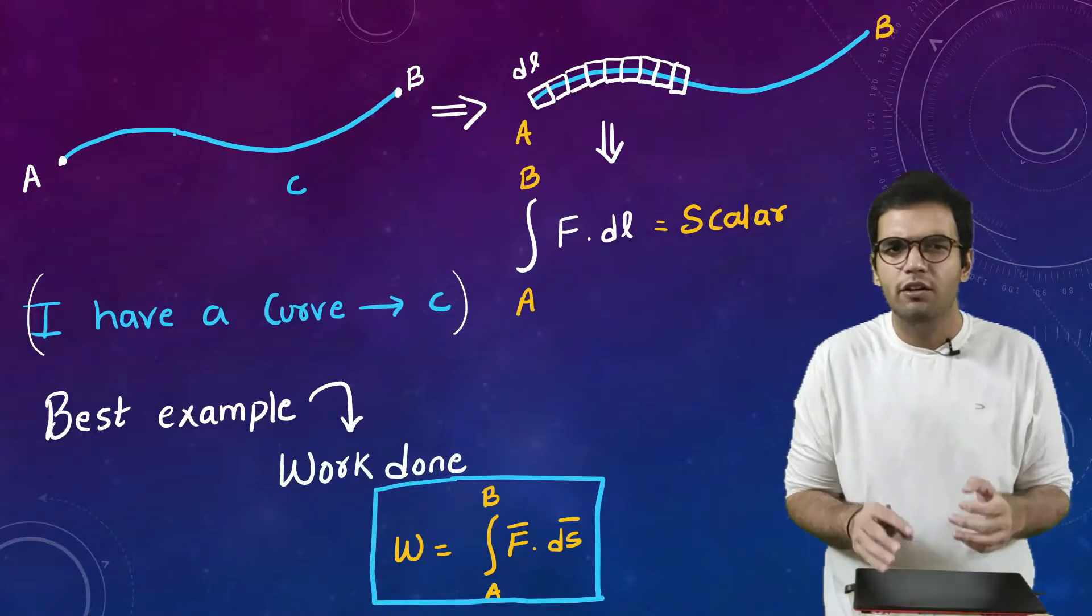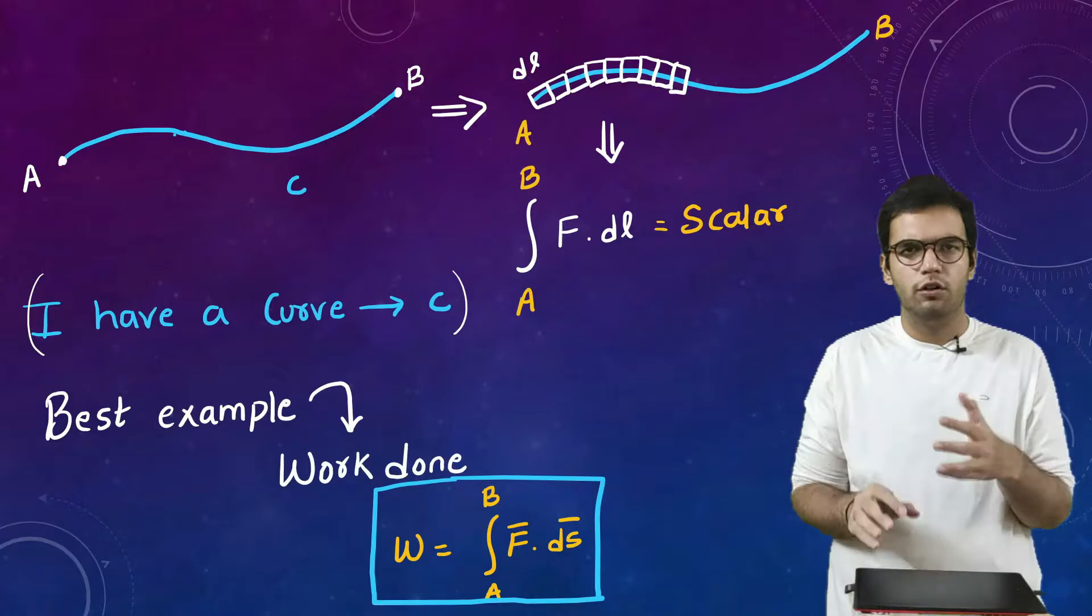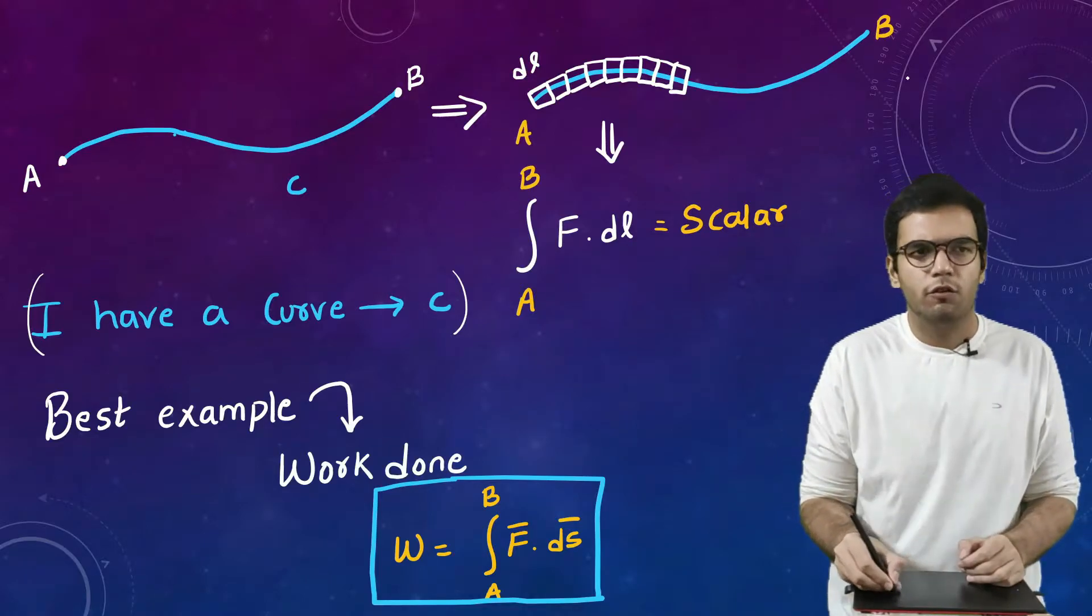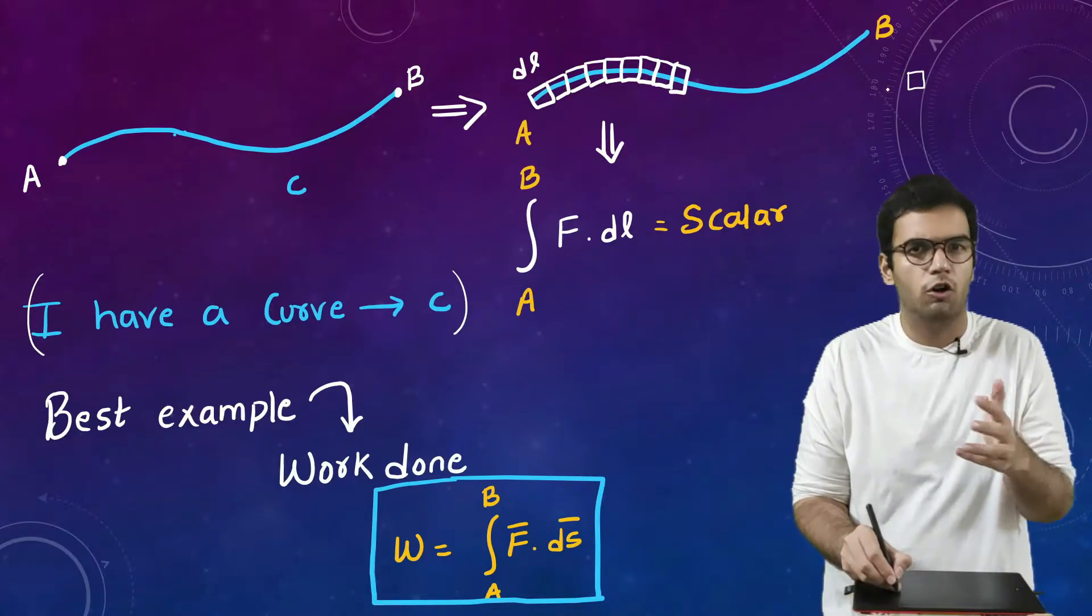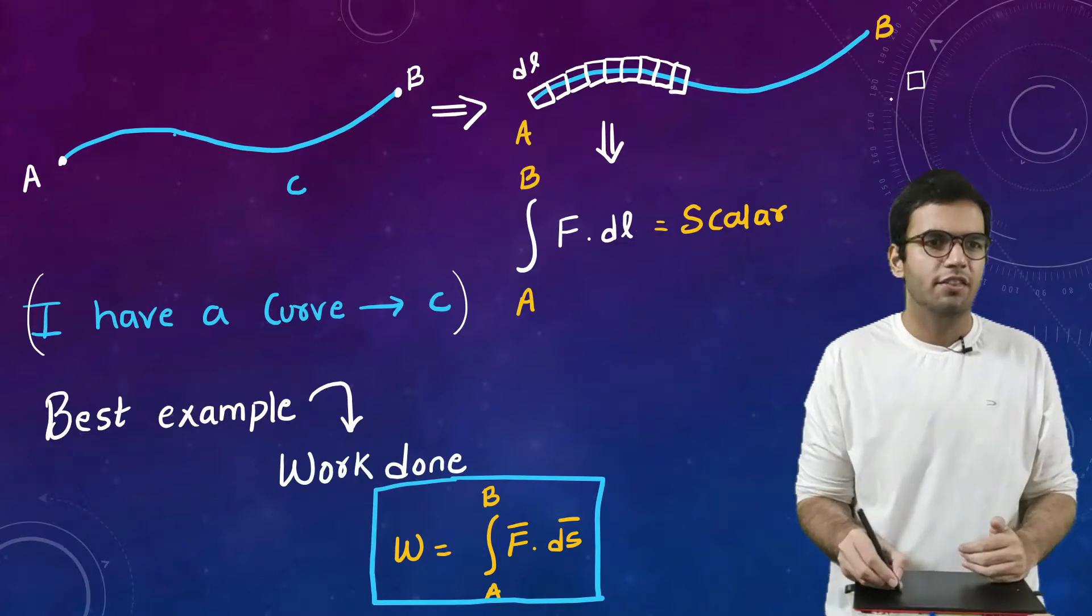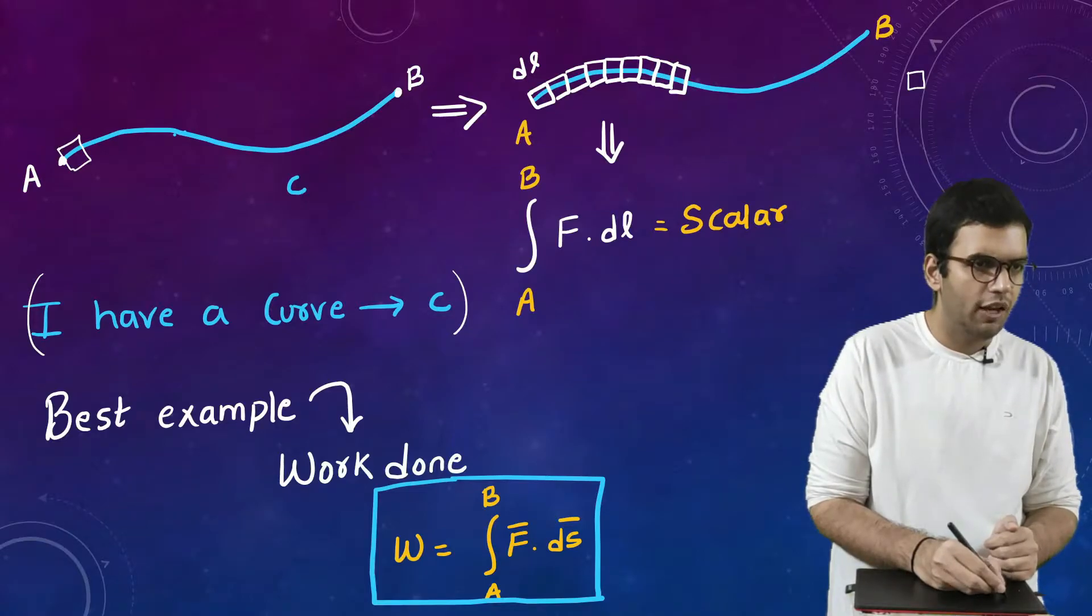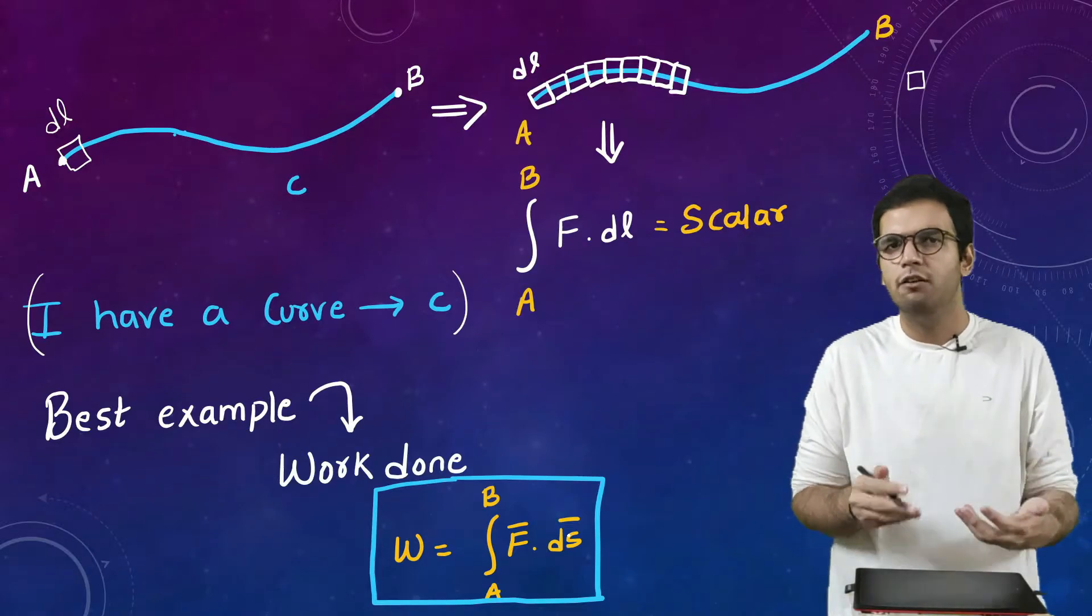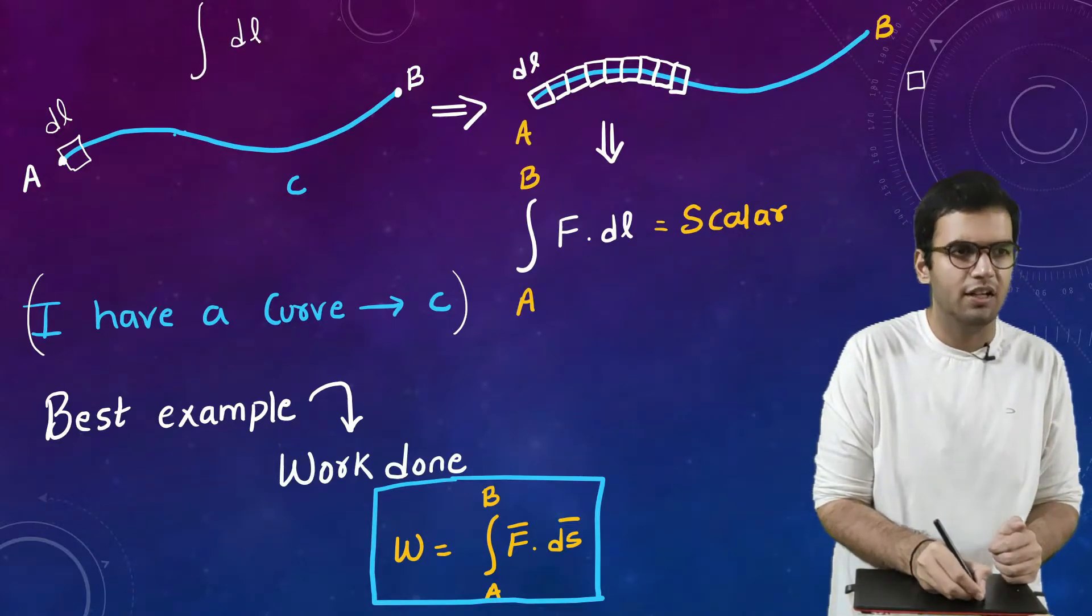Now suppose I want to calculate something on this curve. So in physics we do not calculate things directly. What we consider is a small infinitesimal element on that curve or on that surface or on that volume or anything we are dealing with. Then we integrate that whole thing. So in this case we will consider a small segment which I will name as DL and we will define something for it then finally we will integrate that element DL.